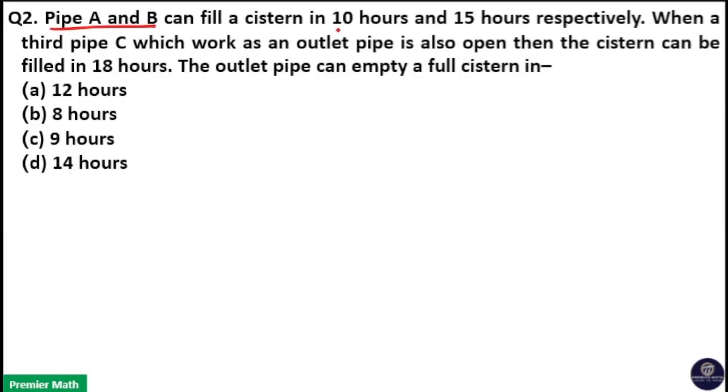Pipe A and B can fill a cistern in 10 hours and 15 hours respectively. When a third pipe C which works as an outlet pipe is also open, then the cistern can be filled in 18 hours. The outlet pipe can empty a full cistern in...